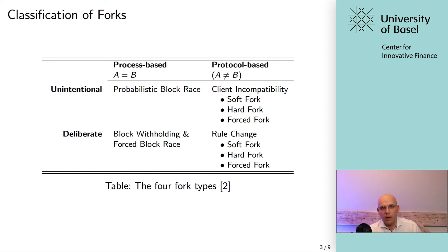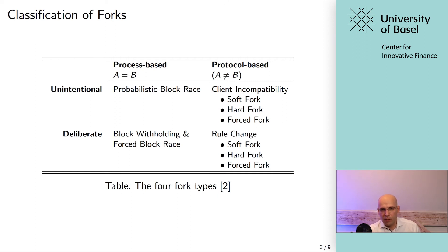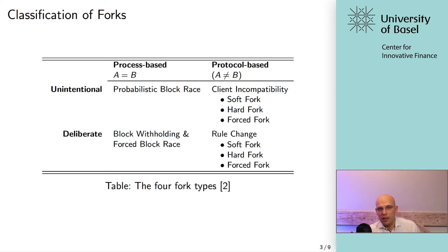Protocol-based forks can create soft forks, hard forks, and forced forks, and it's really important to understand these subcategories because they have huge implications for the persistency of forks. When you change something about the protocol deliberately, it can make a big difference whether the change corresponds to a soft fork, hard fork, or forced fork in terms of implications on the network.